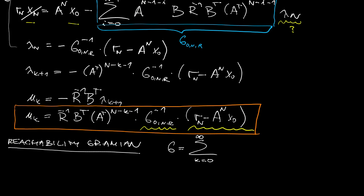And for that, we will recall an object called reachability gramian. It's defined as an infinite sum of the following terms. And it's known that this term, this guy, must be positive definite, strictly positive, if the system is reachable.